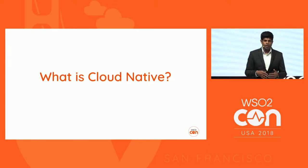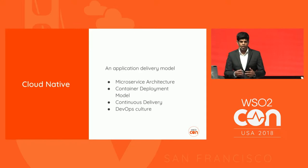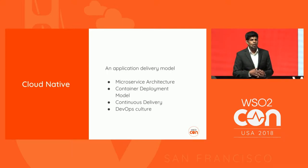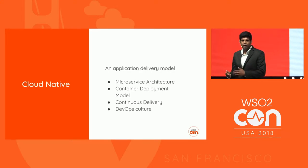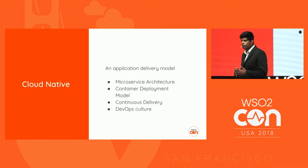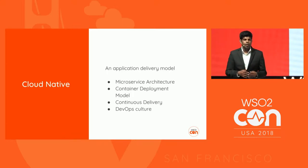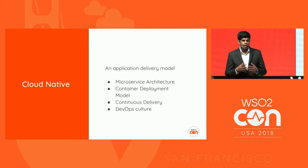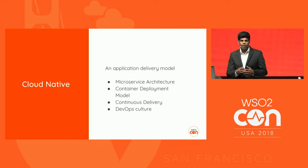Cloud-native is one of the buzzwords in the industry — it is more than just running your application on cloud infrastructure. Cloud-native is an application delivery model which enables you to prototype, experiment, and develop your service and product quickly and go to market without any delay, reducing go-to-market time. It consists of four aspects: recommended architecture (microservice architecture), deployment model (container deployment), release process (agile delivery), and a cultural aspect — you should have DevOps culture within your organization.